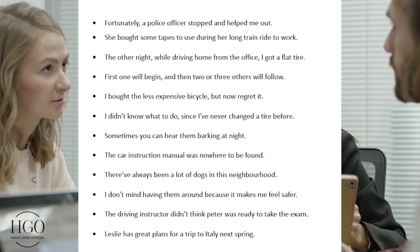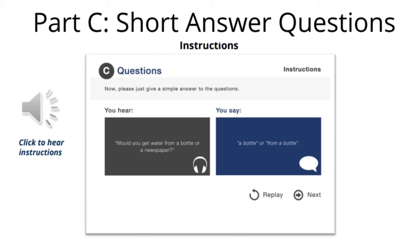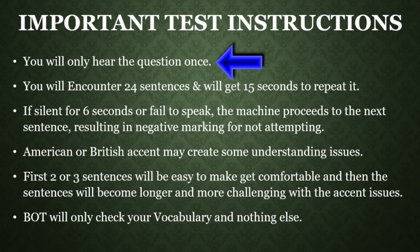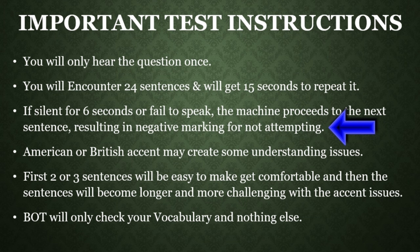Let's move on to our next section, Part C: Short Answer Questions. You will hear a short question and you need to answer with a single word or a single phrase. For example, the machine will say 'would you get water from a bottle or a newspaper?' and you answer 'from a bottle' or simply 'a bottle.' Remember, you just need to say only one word and do not repeat the entire sentence. You will only hear the question once. You will encounter a total of 24 questions and will get 15 seconds to give a short answer.